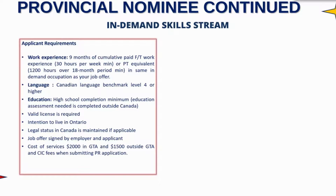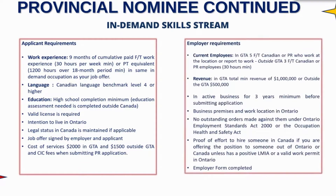You must show intention to live in Ontario and maintain legal status in Canada if you are already in Canada. Your job offer has to be signed by you and your employer. The cost of this program is $2,000 if you are inside the GTA and $1,500 if you are outside. Requirements tend to be lower outside the GTA because they're really trying to stimulate people moving outside of the congested areas like Toronto and Durham, to create job opportunities and bring different skills to different areas of Ontario.